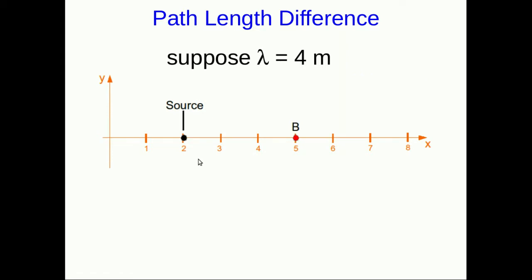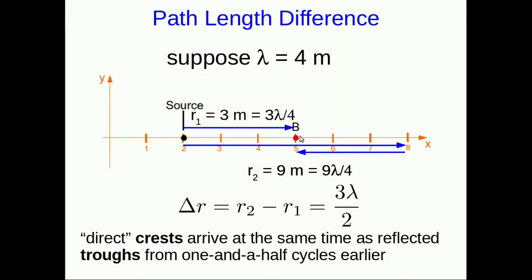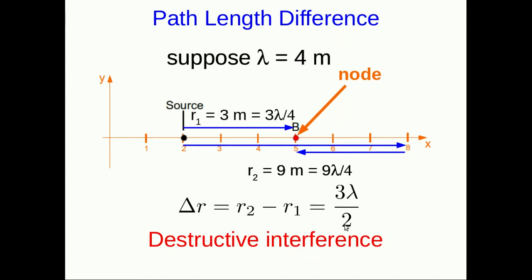Now let's look at a different point on the same system. Our direct path is three meters, which happens to be 3λ/4, three quarters of the wavelength. The reflected path is now nine meters, which is 9λ/4, nine quarters λ. So our path length difference is 9/4 minus 3/4, that is 6/4 or one and a half, 3λ/2. Well, now that means that crests that get there directly are arriving at the same time as things that left here one and a half cycles earlier. And one and a half cycles earlier, what would have been leaving would have been troughs. So crests are arriving at the same time as troughs. So we'll have destructive interference. And this is a node.